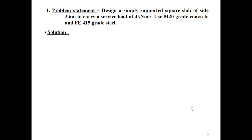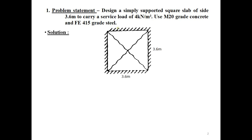First of all we will see the problem statement. The problem is to design a simply supported square slab of side 3.6 meters to carry a service load of 4 kN/m² using M20 grade concrete and Fe415 steel. The slab is simply supported on all four sides, with a size of 3.6 m × 3.6 m and a service load of 4 kN/m².